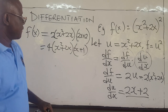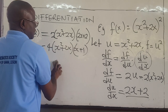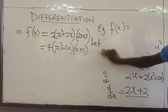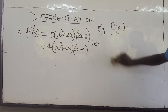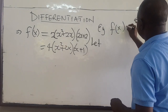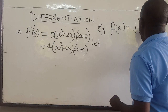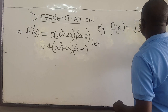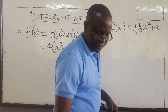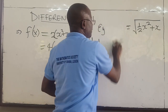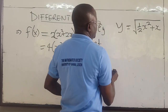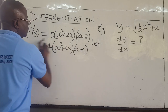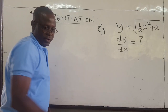Let's do one more example that uses the chain rule. Suppose f of x is given by the square root of 1.5x squared plus x. I'm going to write this as y, so let y be equal to the square root of 1.5x squared plus x. What is dy/dx? We're going to apply the chain rule again.